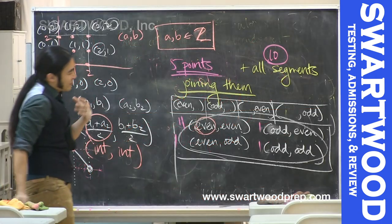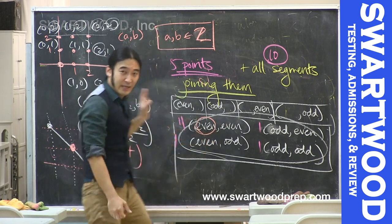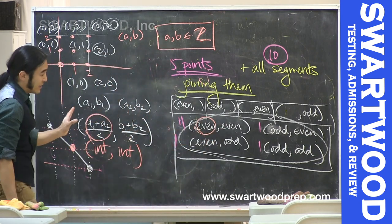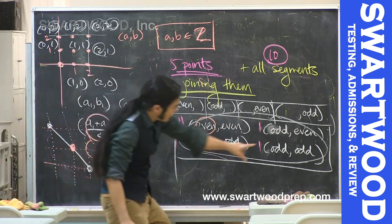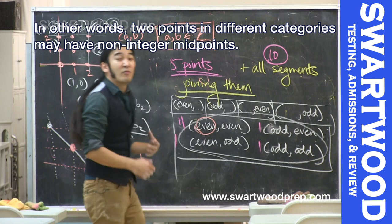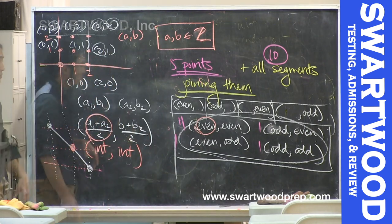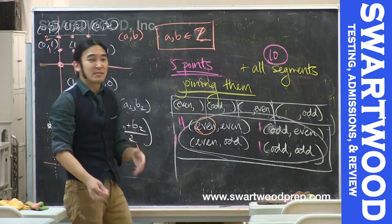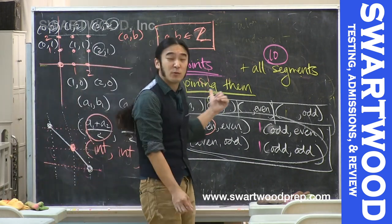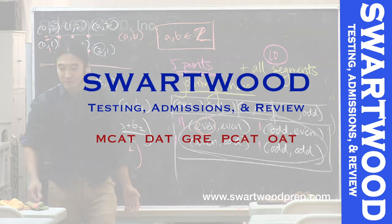It's not guaranteed that every segment has an integer lattice midpoint, but we're guaranteed to find at least one segment where that's true. Let's let these Pigeonhole principle problems go and find something else to do.